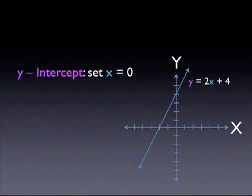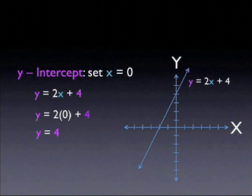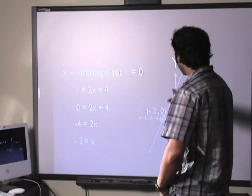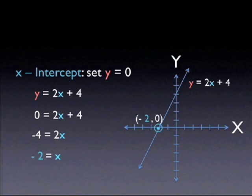To find the y-intercept, we set x equal to zero. When x is zero, y simply equals 4. There it is, 0 comma 4 is the y-intercept. To find the x-intercept, we set y equal to zero. When we work that out, we get x equals negative 2, which shows us that on the x-axis, the x-intercept is negative 2, 0. Remember, if we want to find the x-intercept, we have to make the y-value zero. We don't want to go up or down, we want to be right on the x-axis. To find the y-intercept, we don't want to go left or right, we want to be right on the y-axis.